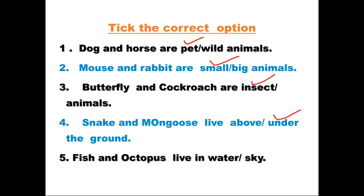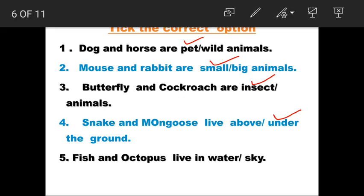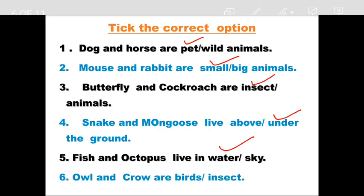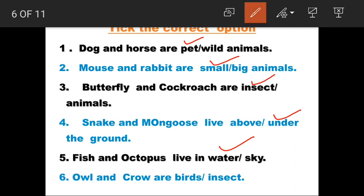Next: Fish and octopus live in water or sky? If fish started flying in the sky that would be fun, but they can't live without water, so we write water. Next: Owl and crow are birds or insects? Yes, these are birds. Okay, very good.